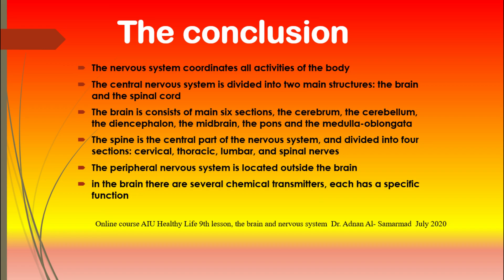Finally, in the brain there are several chemical transmitters, each with specific functions. For example, GABA — gamma-aminobutyric acid — works as an inhibitor receptor, which calms you down by reducing nerve impulses. While dopamine gives you pleasurable impulses.